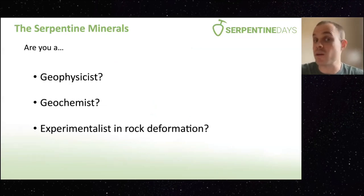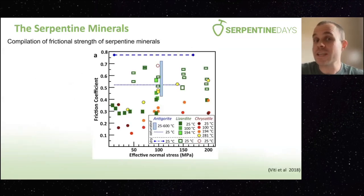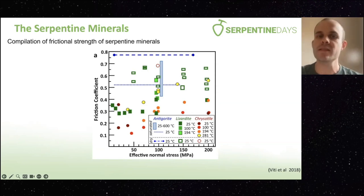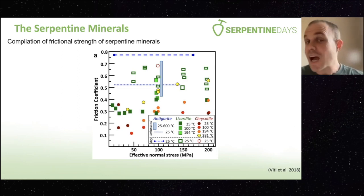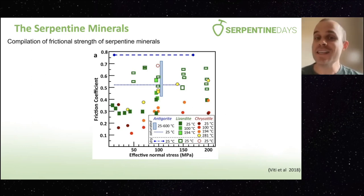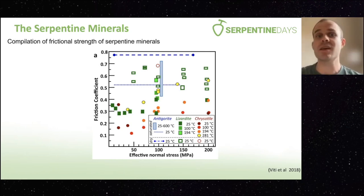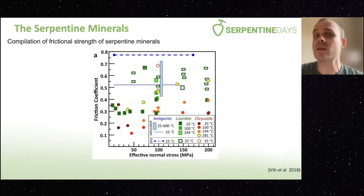Finally, this is the one that really gets me: experimentalists in rock deformation, particularly if you care about individual serpentine minerals. Here we're looking at a compilation of frictional strengths — frictional coefficient versus effective normal stress — and it's a mess. The entire field is populated. The reason, I believe, is quite simple: it's near impossible to differentiate and certainly to isolate any one of these single minerals, except for maybe antigorite. This has led to quite a bit of mess in the frictional strengths of serpentinites. So if you're doing these types of experiments, microstructures matter.